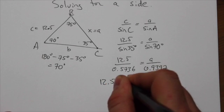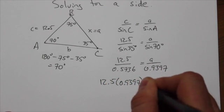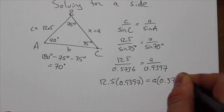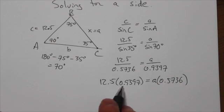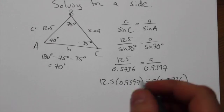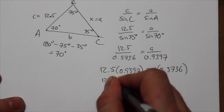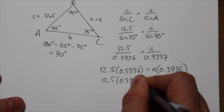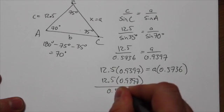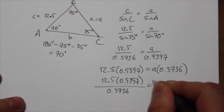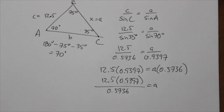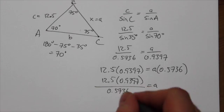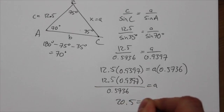So now we cross multiply here. 12.5 times 0.9397 equals a times 0.5736. Notice again, I'm going to four decimal places when I evaluate the trig functions. That's just a standard way of doing that. And you never cross multiply without dividing. So we're going to divide by 0.5736 is equal to a. And now we just go to our calculators and do this calculation. So it's going to take me two seconds here to make sure I enter that in correctly. And I get here that this is 20.5 is equal to a.